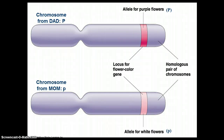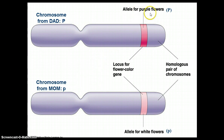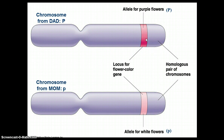Here's another good example. We have a chromosome from mom and a chromosome from dad, and this is for flower color. Here's an allele for purple flowers, and here's an allele for white flowers. They're still located in the same place on the same chromosome — just two different forms of the gene, so they're two different alleles. Purple is one allele and white is another allele.